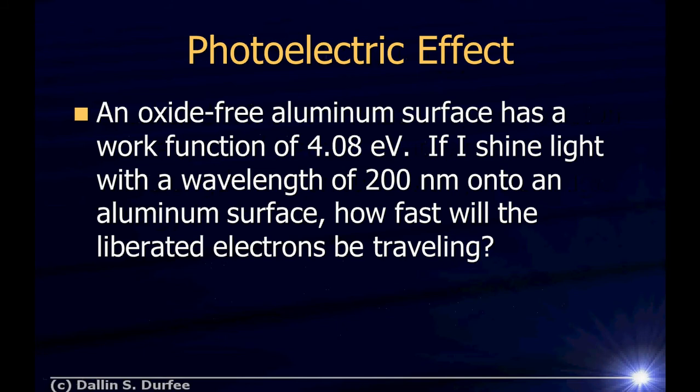Next problem, photoelectric effect. An oxide-free aluminum surface has a work function of 4.08 electron volts. Why electron volts? Why not joules? Well, because this would be really tiny in joules, and we're dealing with electrons. When I measure the velocity of an electron, I'd probably do it by deflecting it with a plate that I charge up with volts. So electron volts are kind of a natural unit for these kinds of experiments. If I shine light with a wavelength of 200 nanometers onto an aluminum surface, how fast will the liberated electrons be traveling?